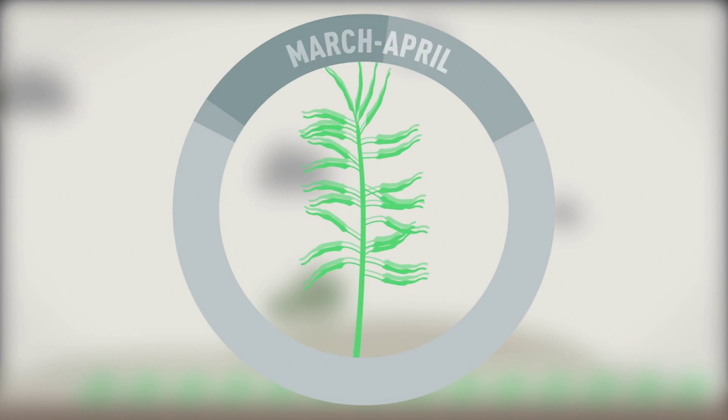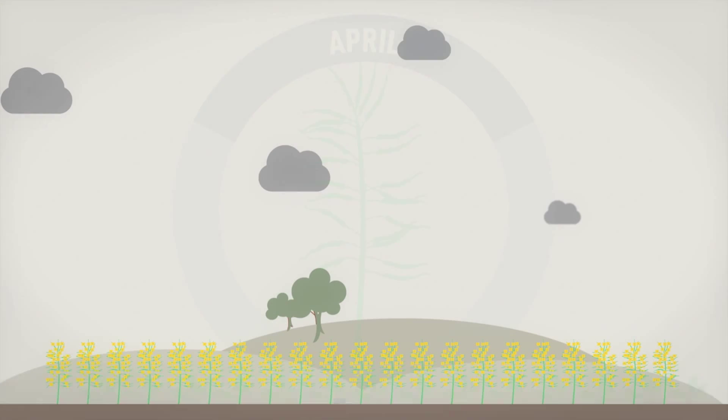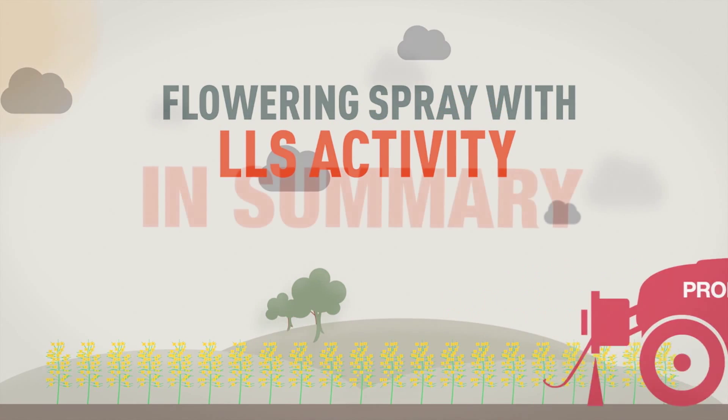To prevent the late development of the disease in the canopy and potential pod infection, use a flowering spray with lightleaf spot activity.